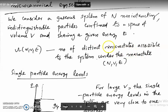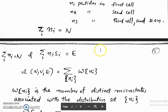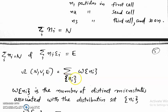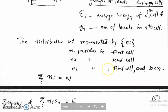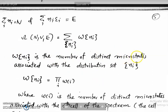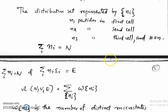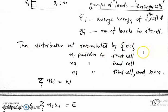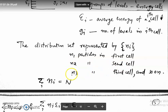Omega is the number of distinct microstates accessible to the system under the macrostate N, V, and E. Omega is written as a summation over different distribution sets of W(Ni). W(Ni) is the number of distinct microstates associated with the distribution set Ni. The distribution set is a set of numbers representing the number of particles in the first cell, second cell, third cell, and so on.